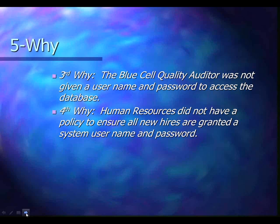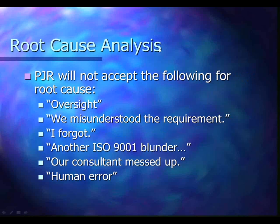Some things we will not accept for root cause: oversight, 'we misunderstood the requirement' — though there's a little tolerance for this on an initial Stage 2 audit; by Surveillance Audit 18, you should understand the requirements. Also unacceptable: 'I forgot,' 'our consultant messed up,' or 'human error.' These are not root causes.